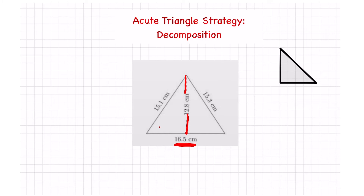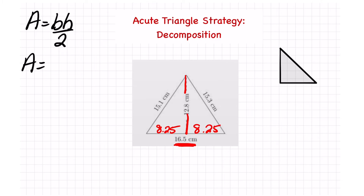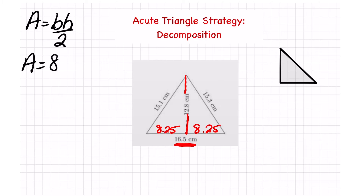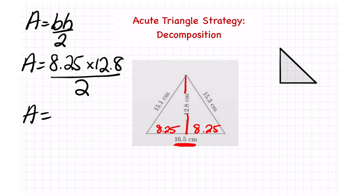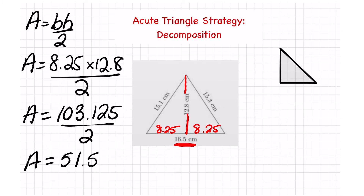I'm going to break this in half, and if I'm breaking this in half that means I'm also breaking the base directly in half. So this part over here is going to be 8.25 and this part here is 8.25. If you're not sure, use your calculator. Now I'm going to use my formula for right triangles: base times height divided by two. Here's my base and here's my height — the two sides that go around the right angle. So let's put in 8.25 times 12.8 and divide that entire part by two. I get 103.125 divided by two.